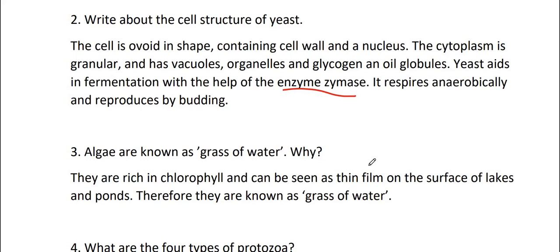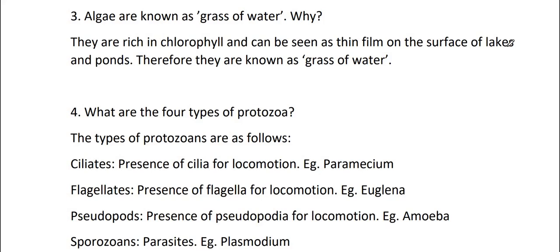Algae, third question. Algae are known as grass of water. Why? They are rich in chlorophyll and can be seen as thin film on the surface of lakes and ponds. Therefore, they are known as grass of water.